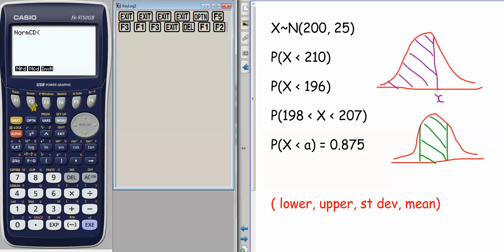If I click NORM CD, then it opens up a bracket, and the parameters that go in that bracket is what's in red down here. If we imagine our lovely bell-shaped curve, if I want to find the probability between this value and this value, then I would put this in as being the lower value, the upper value, the standard deviation, and then the mean.